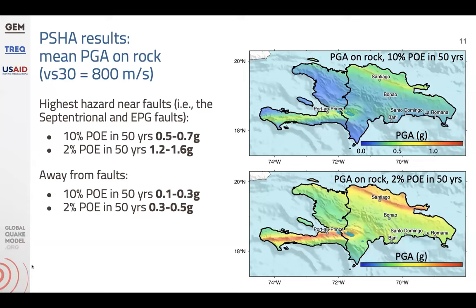To give a couple of examples of results computed with this model, starting with hazard maps: the two maps shown are peak ground acceleration computed on rock at 10% and 2% probability of exceedance in 50 years. The highest hazard is concentrated near faults — we can see this along the Septentrional Fault north of Santiago, as well as on the east-west fault in the southwest of Hispaniola near Haiti near Port-au-Prince. Away from these faults, the hazard reduces a lot but is still persistent throughout the entire coverage of the model.